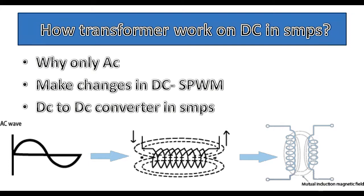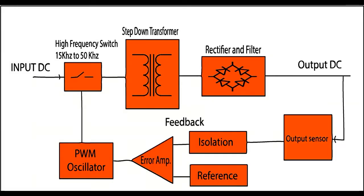I am going to explain the DC-to-DC converter in SMPS. Here is the block diagram of the DC-to-DC converter. A high-voltage DC power is acquired from the DC power source. This high-voltage DC power is then switched, usually in the range of 50 kHz, and fed to the step-down transformer. The output of the transformer is then fed to the rectifier.